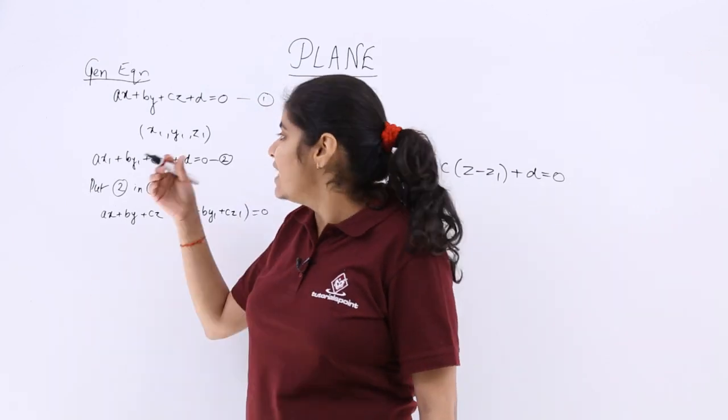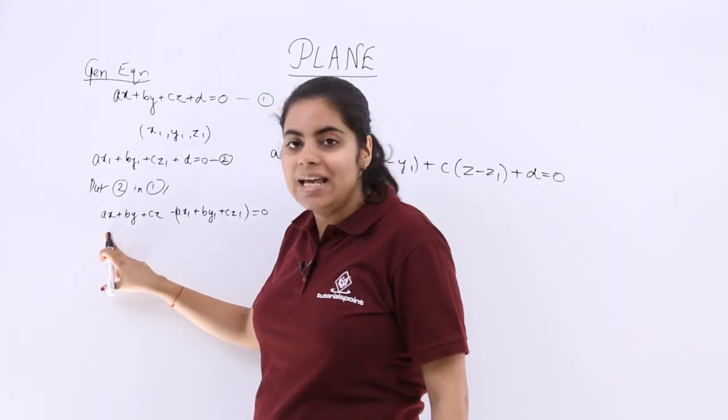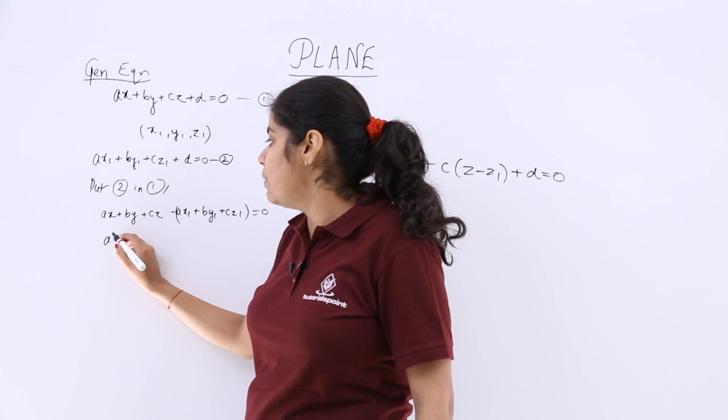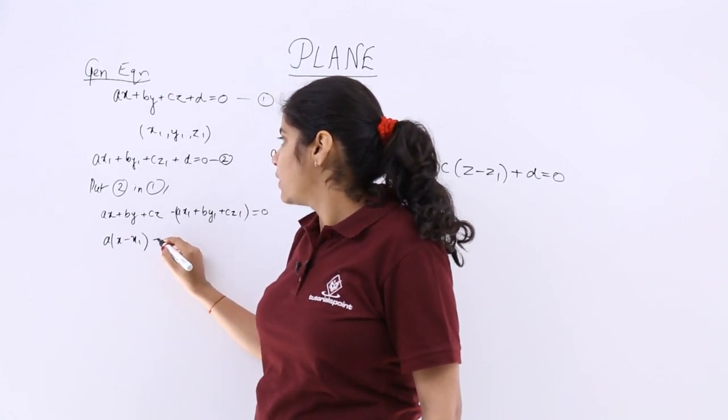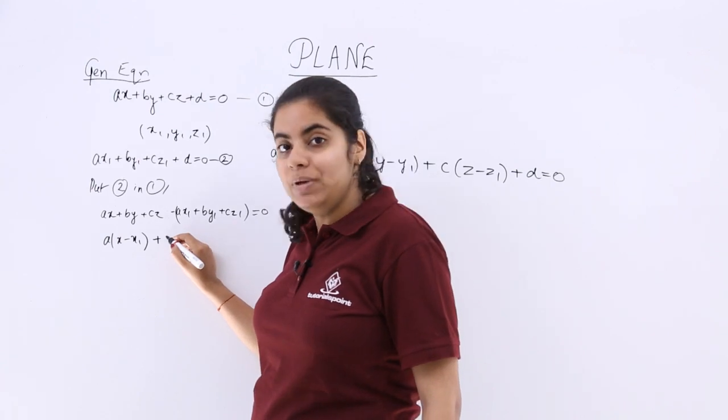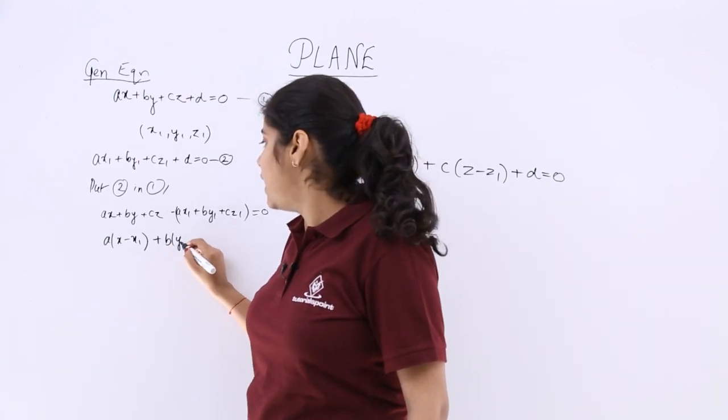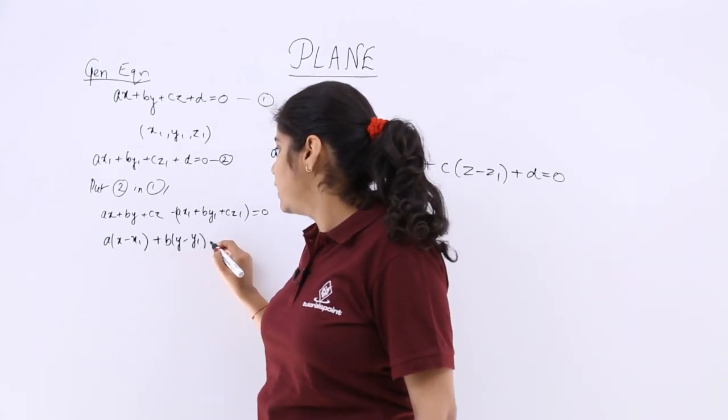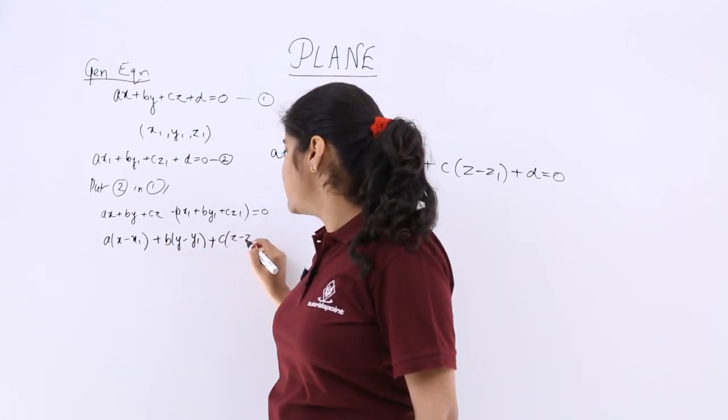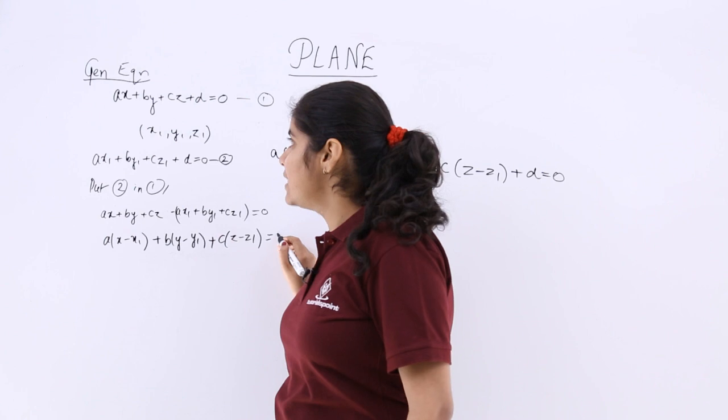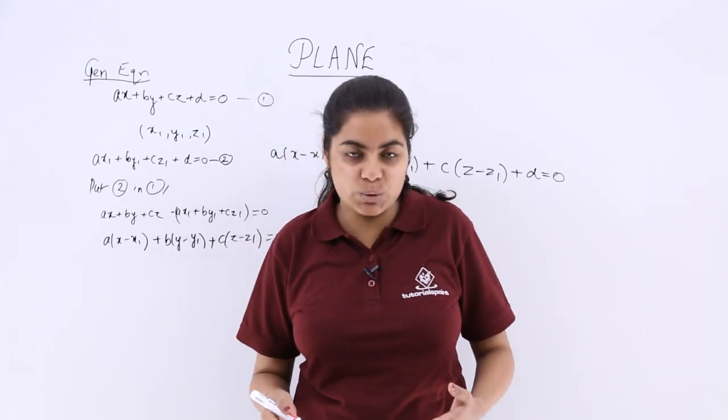Now what has to be done? Now simply speaking, just take certain things common. So it is a becoming common, x minus x1 plus b becoming common, y minus y1 plus c becoming common, z minus z1 is equal to 0. So this is the equation.